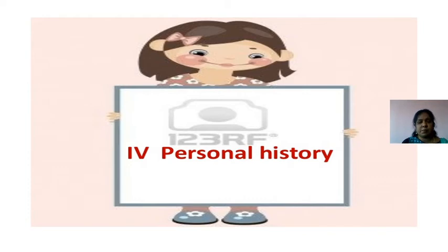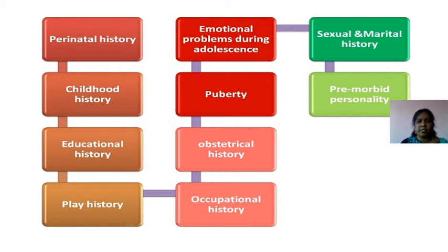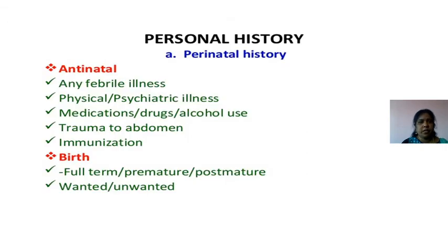Next, we see the personal history. In personal history, I mentioned: perinatal history, childhood history, educational history, play history, emotional history, puberty, obstetric history, occupational history, sexual history, and premorbid personality. We will see each one in detail. This is the personal history — perinatal history.